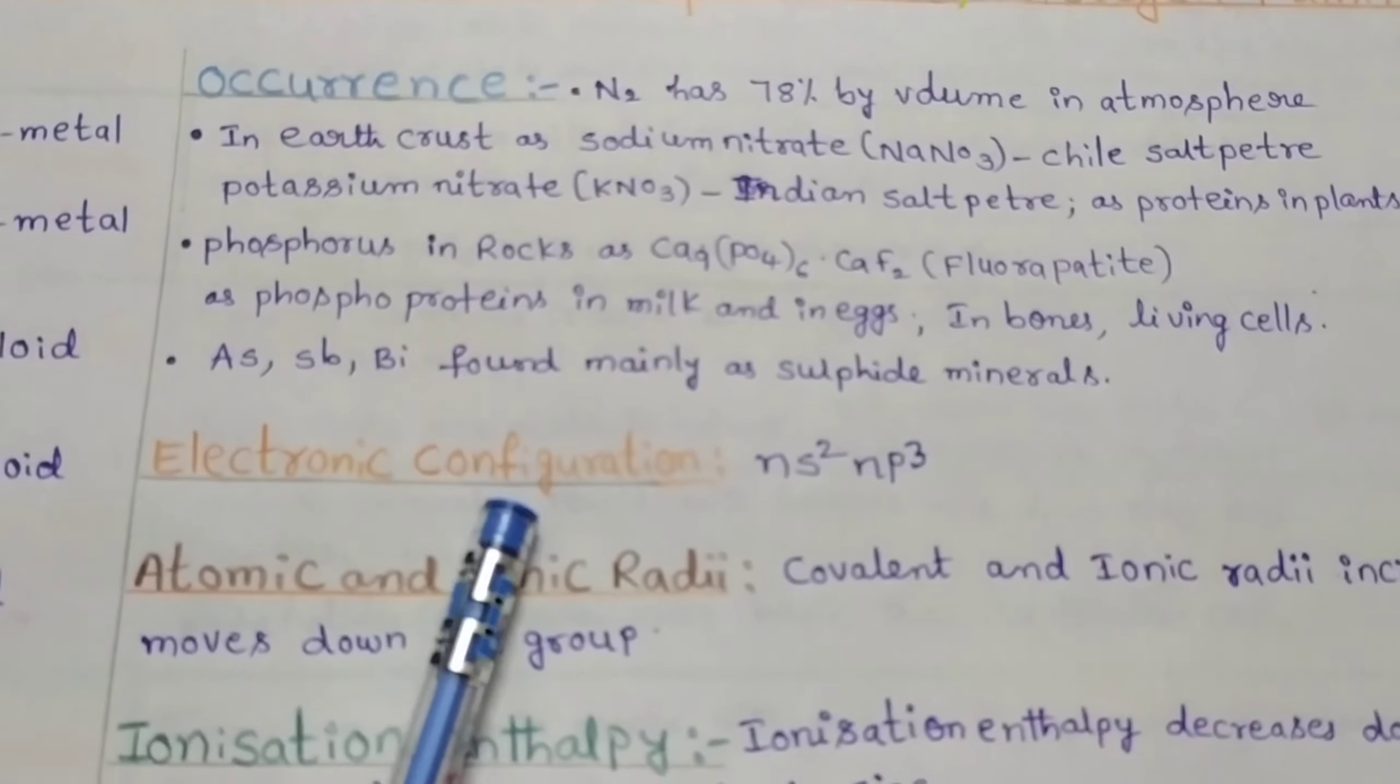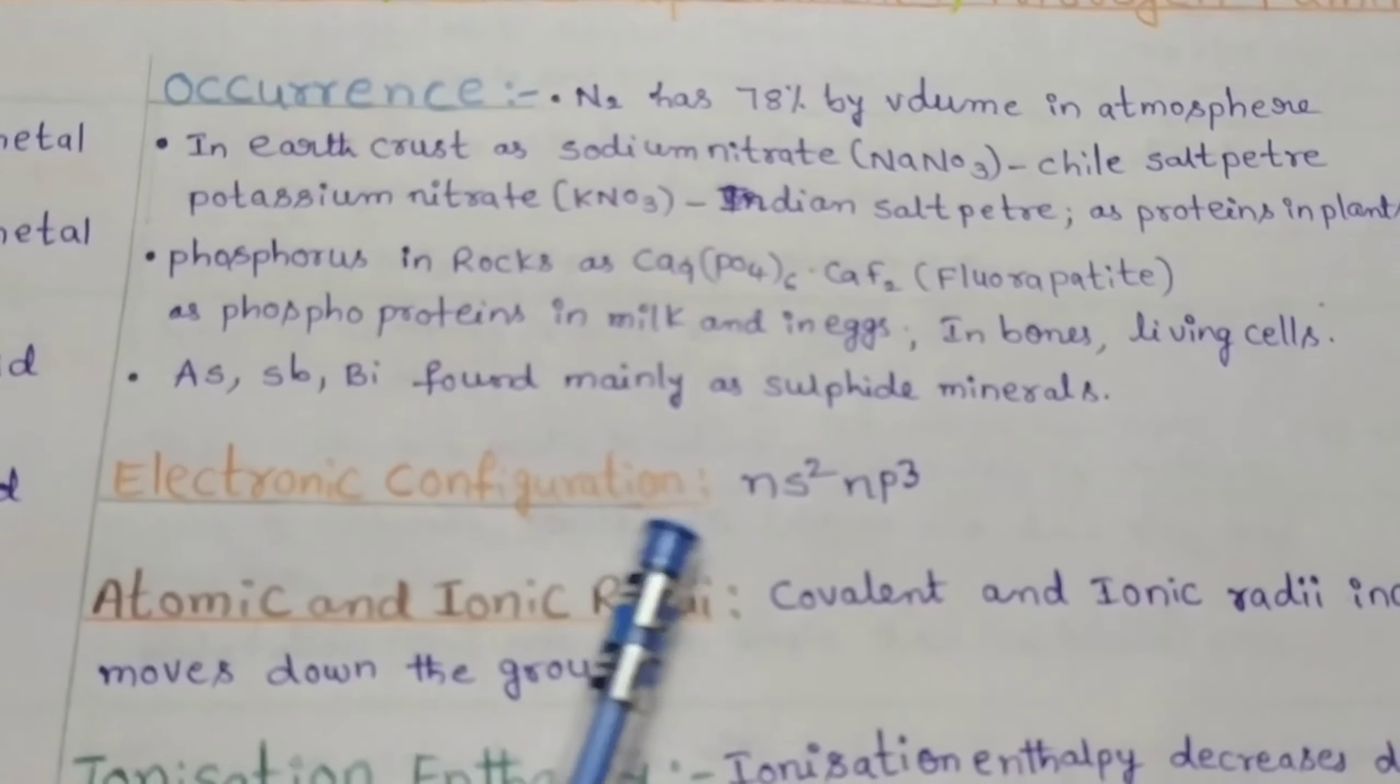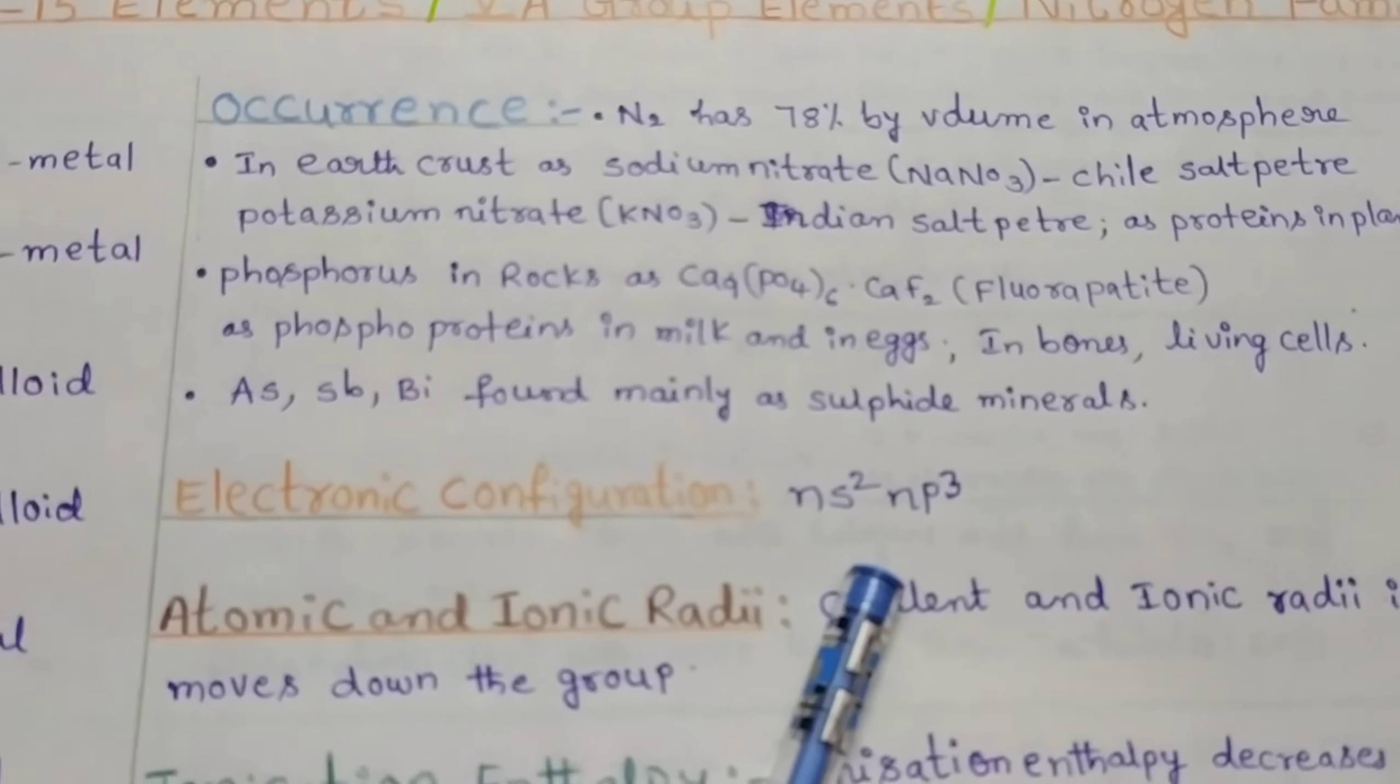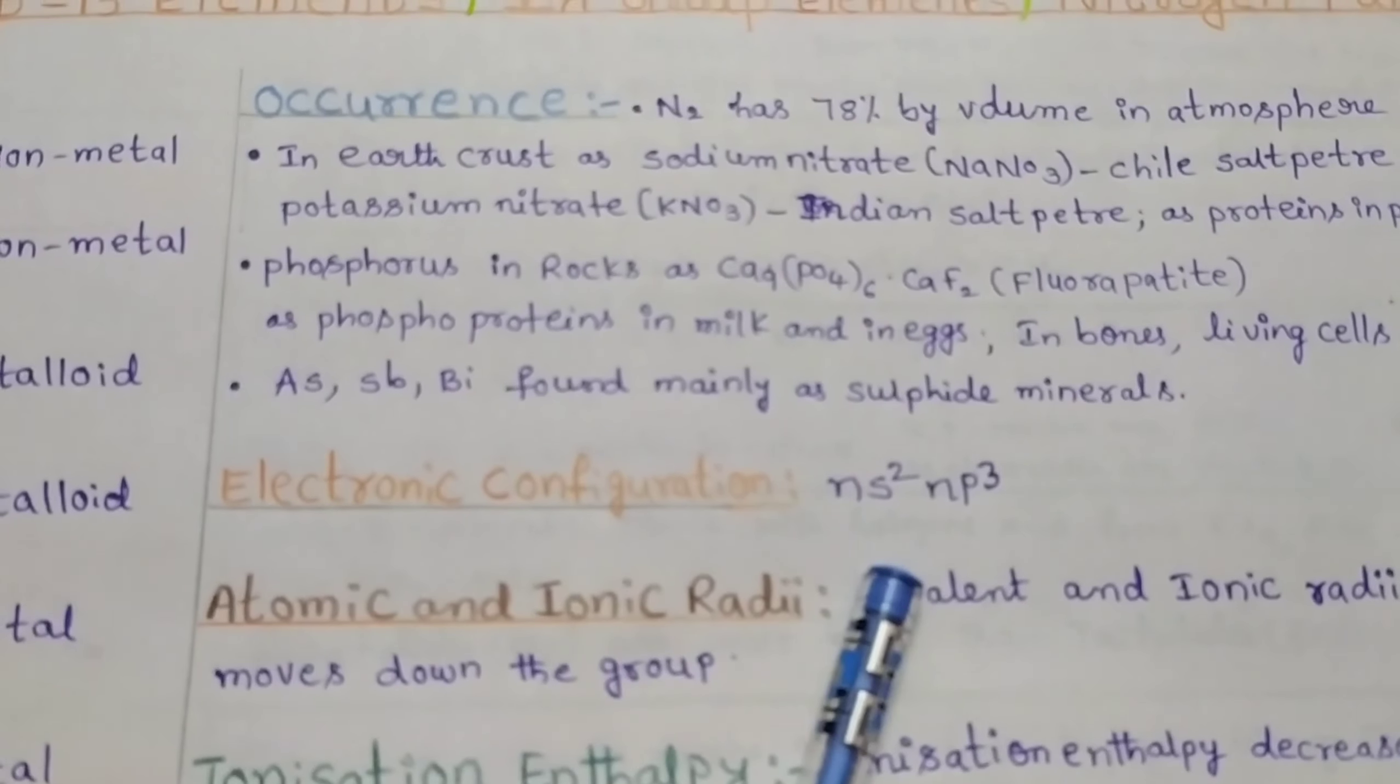Electronic configuration of group 15 elements is ns² np³. This is the general electronic configuration of group 15 elements.